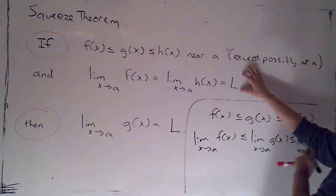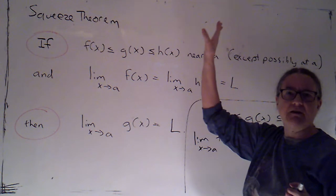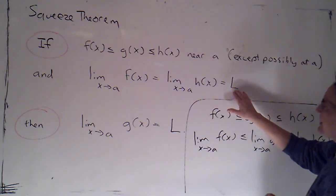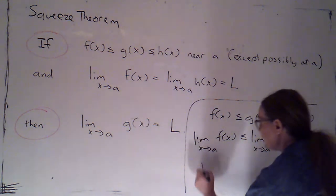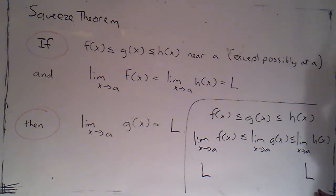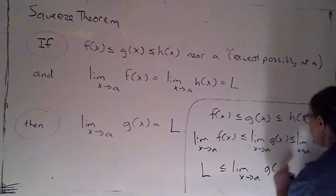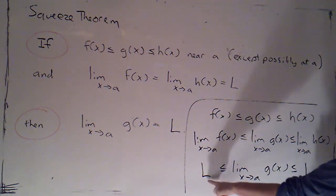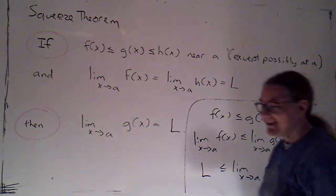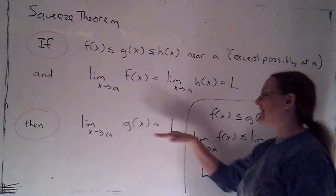The second condition I need is that two of these limits do need to exist and be a finite number. This would actually work if f and h were both going off to infinity and g was in between them — it would be going off to infinity too — but the theorem applies to finite limits. So that's saying this thing exists and it's L, and this thing exists and it's L. That would mean that the limit of g(x), if it exists, has to be in between L and L.